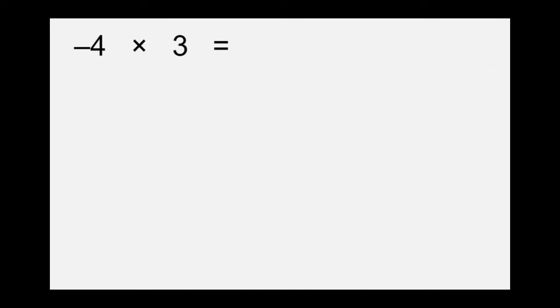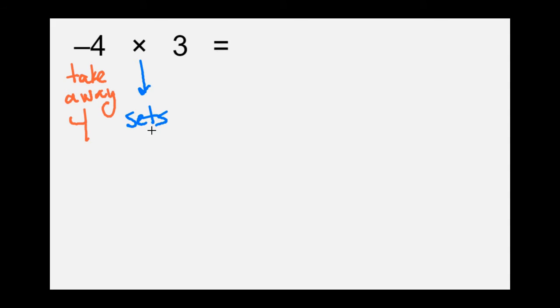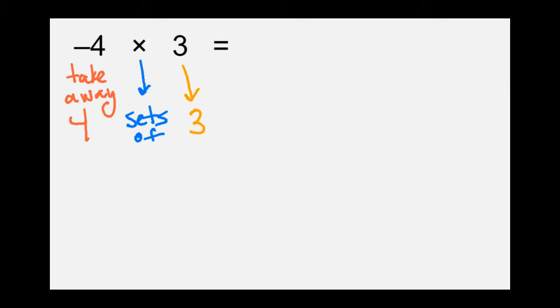Example number three: negative 4 times positive 3. First, let's figure out what this problem is telling us. Negative 4 tells us to take away four. The multiplication sign means sets of. And positive 3 tells us what's going to be in each set. So we're going to take away four sets of positive 3.